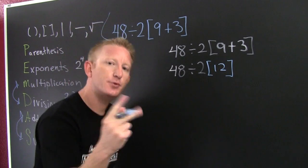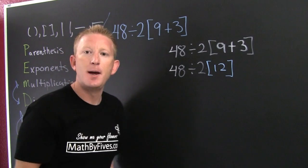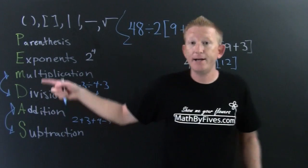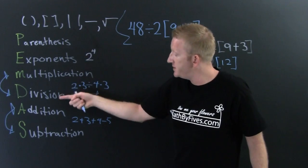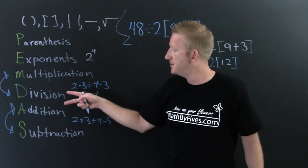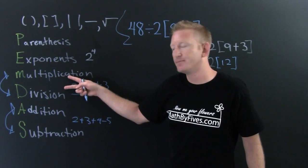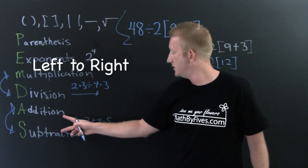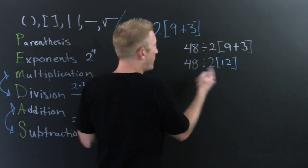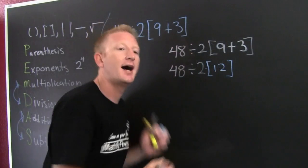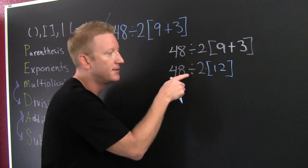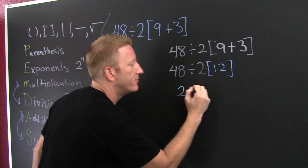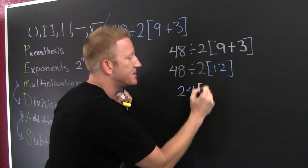Now we see two things: division and multiplication. But they're written from left to right, which means — even though multiplication is higher on the hierarchy — we go from left to right. Multiplication and division are really the same level, so you go from left to right. So 48 divided by 2 is 24. Those parentheses are now indicating multiplication.